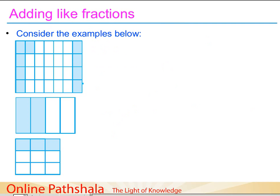Let us start with three examples. Taking figure 2 as the simplest example — if I want to represent the shaded part as a fraction, it is straightforward since we have 2 parts out of 4 parts. So I represent the shaded part as 2 fourths, or 2 by 4.